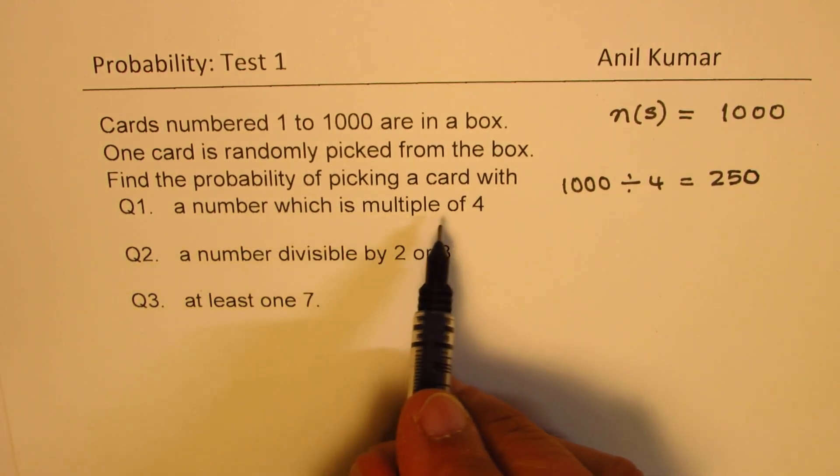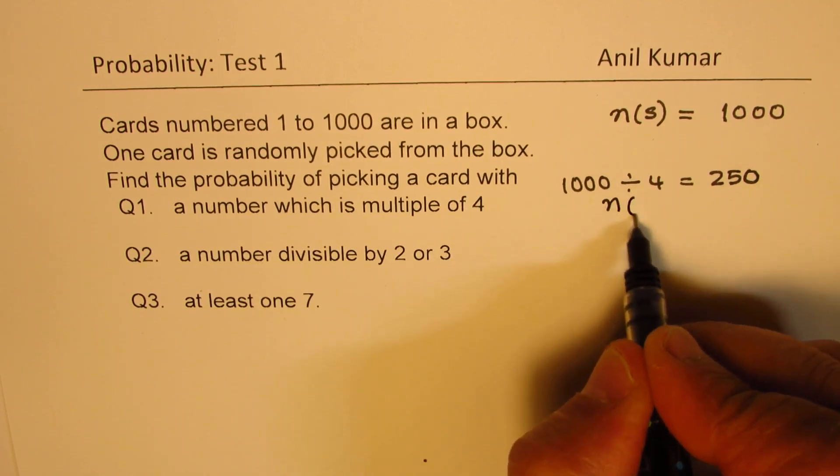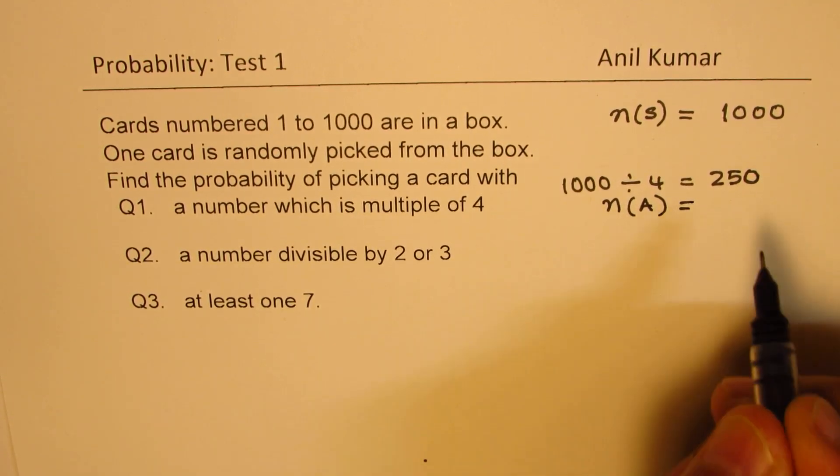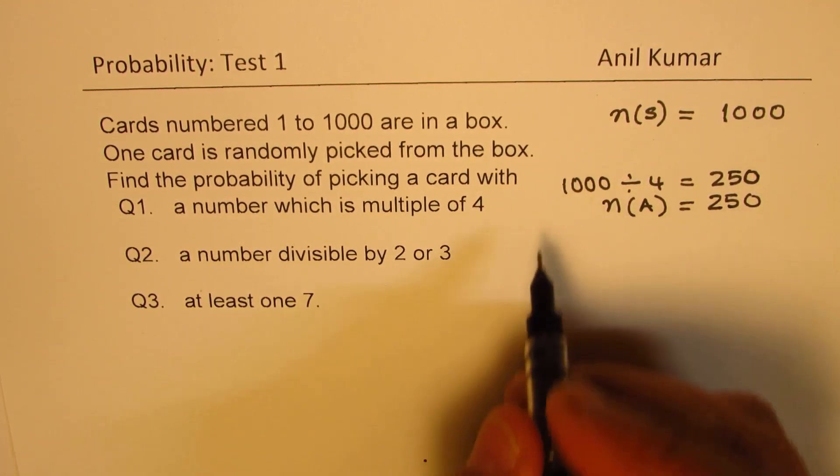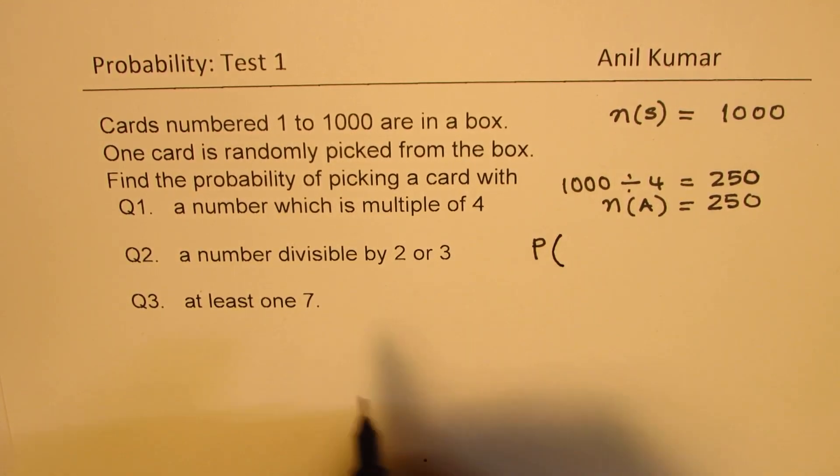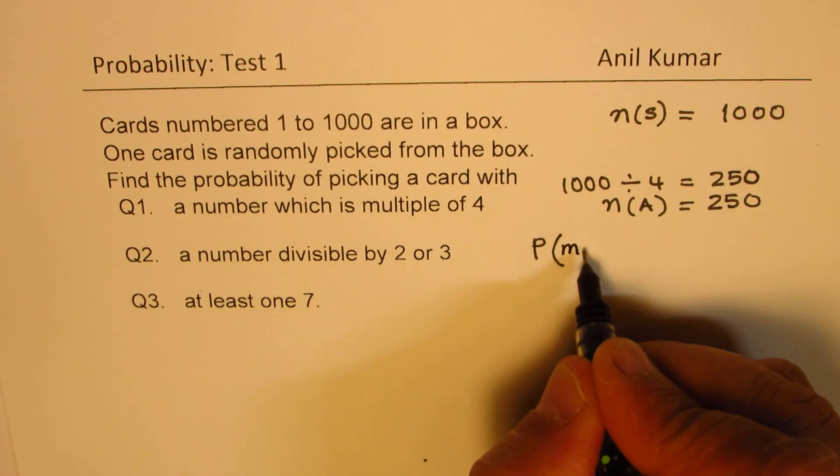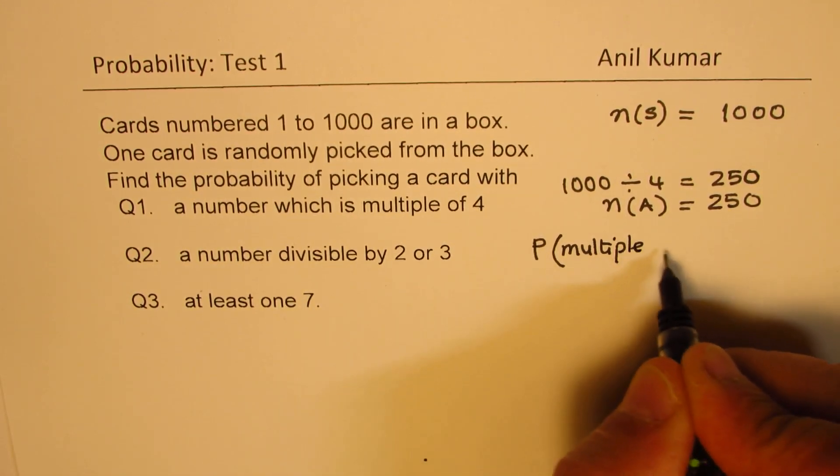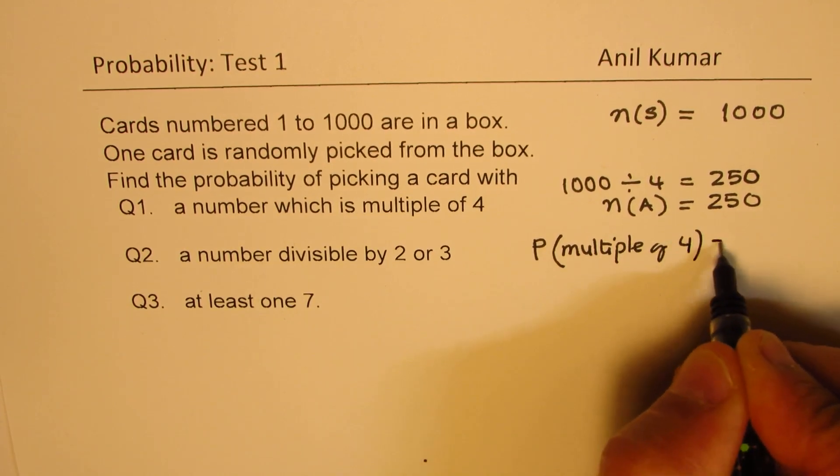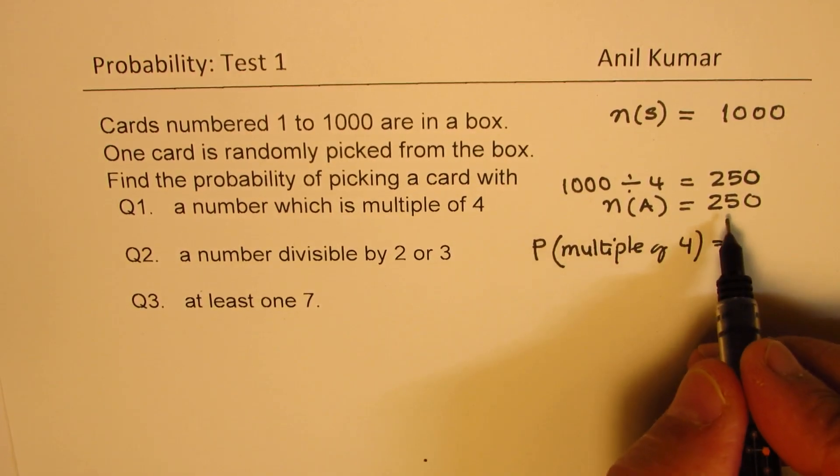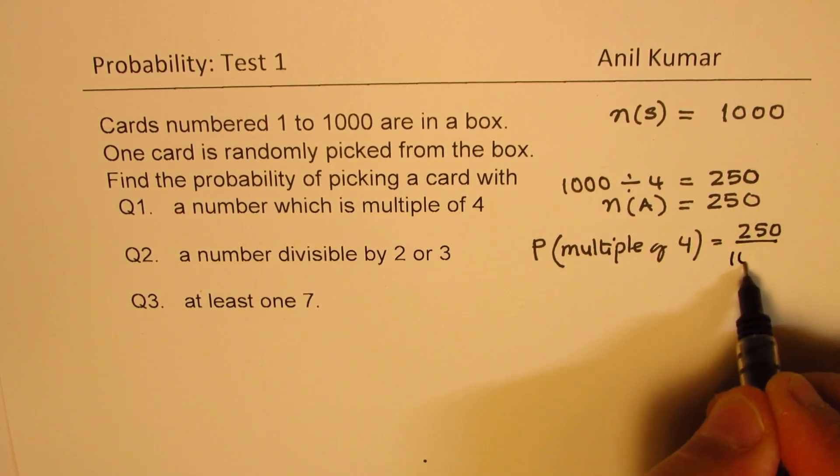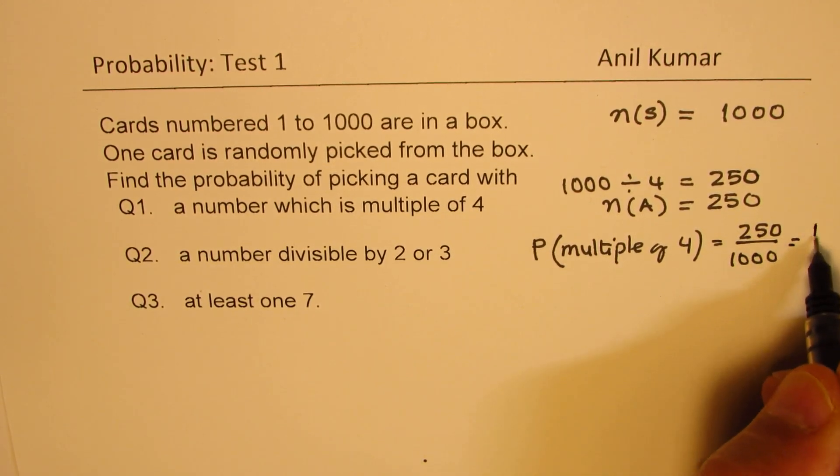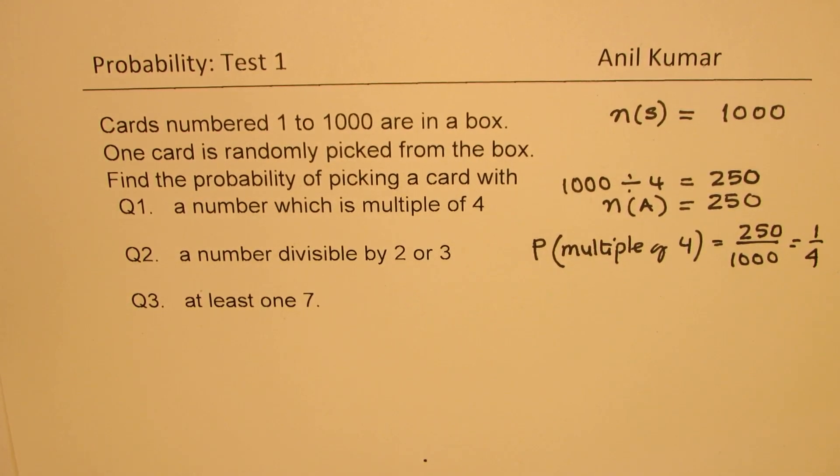So for event A, we can say that favorable numbers are 250 out of 1000. And therefore, the probability for multiple of 4 is 250 divided by 1000, which is 1 over 4. So that is how we get part A.